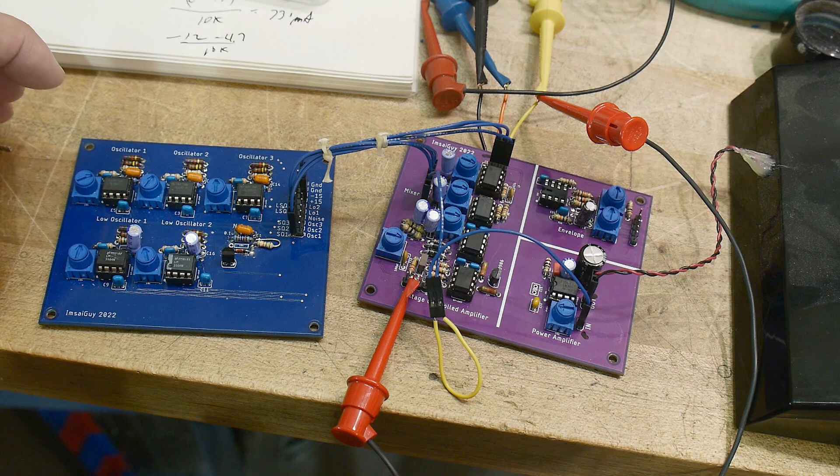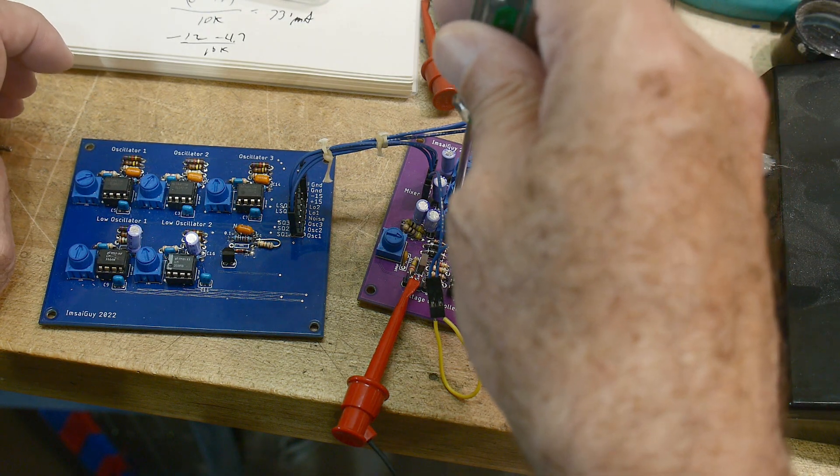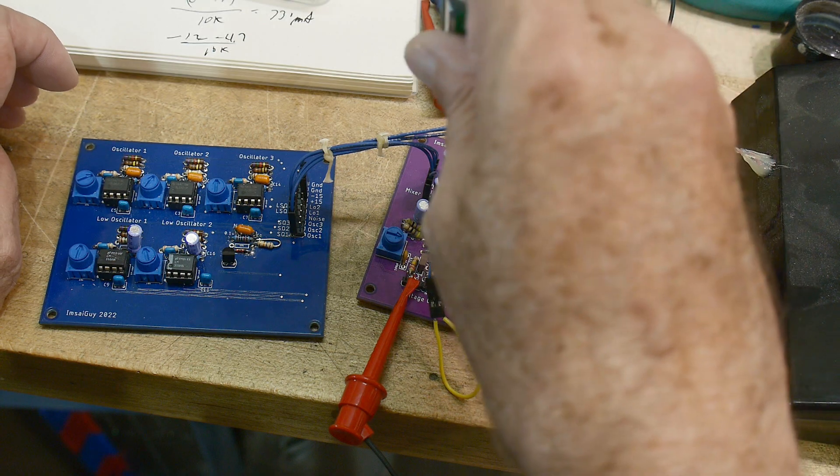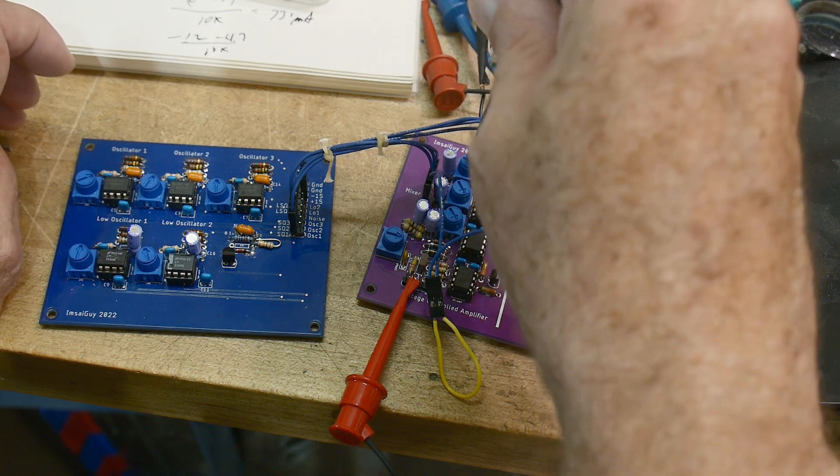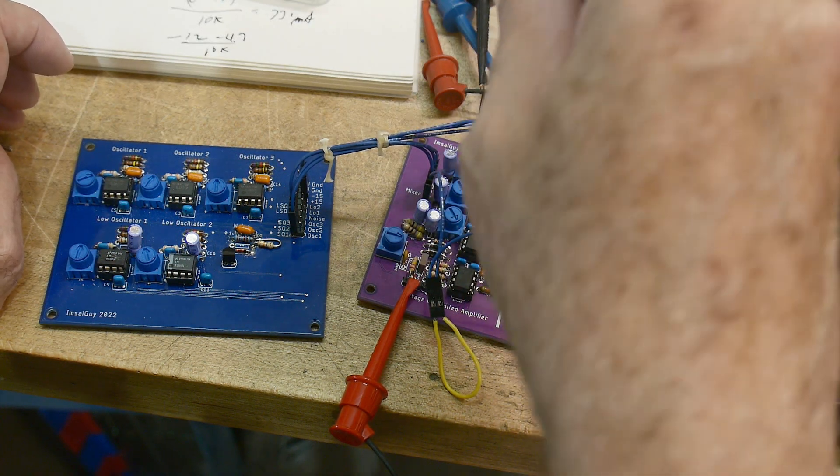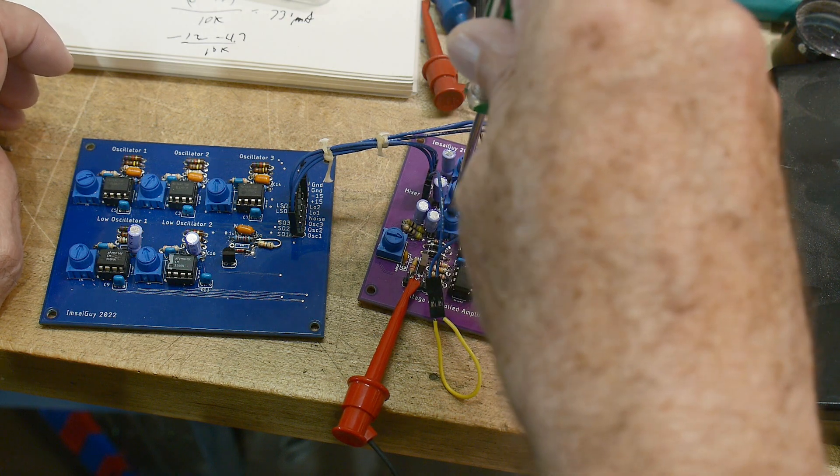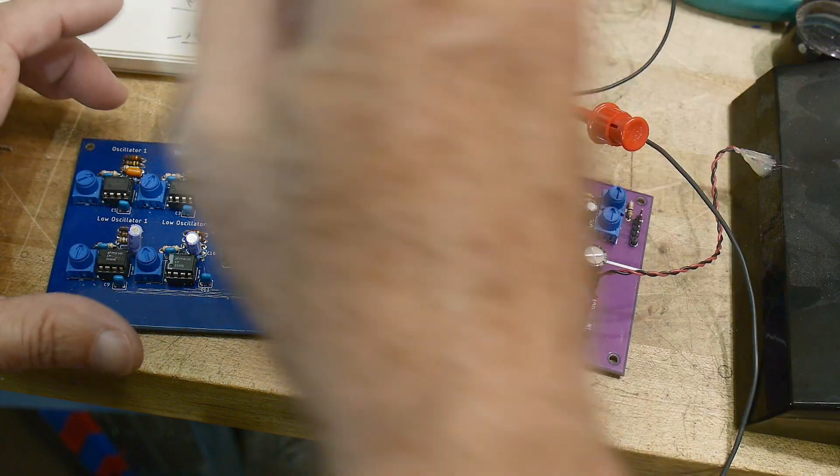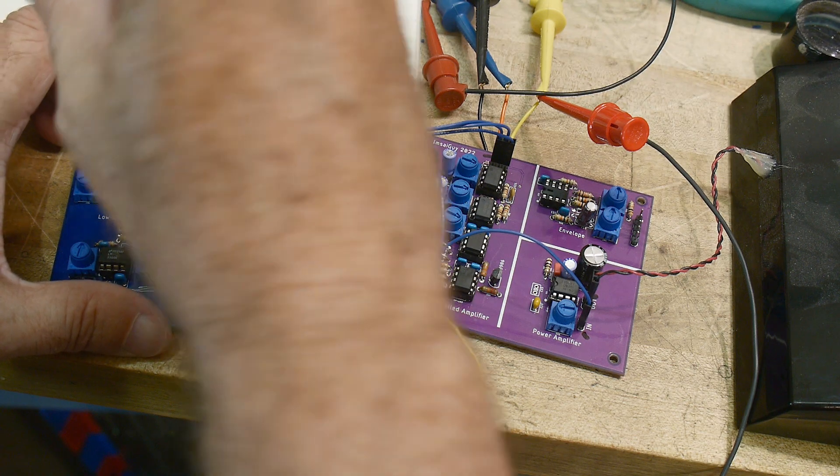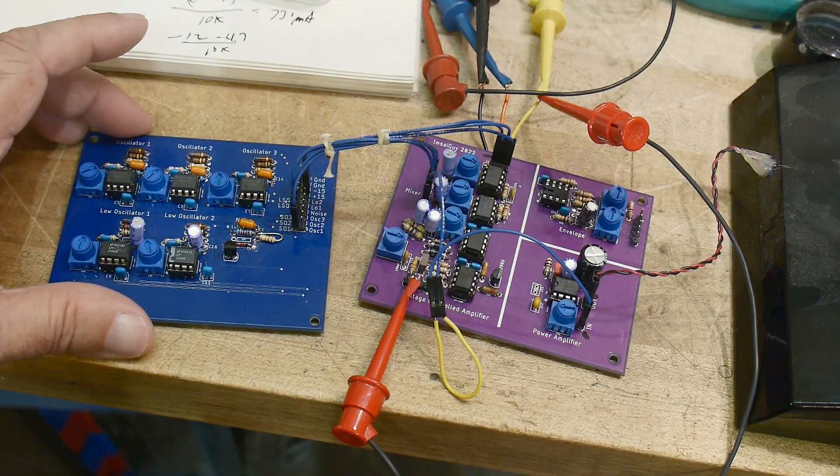There you go, perfect triad. So it's a major third and a fifth. We could make it a minor if we wanted to. We could lower the third. There we go, there's a minor third, a minor triad.